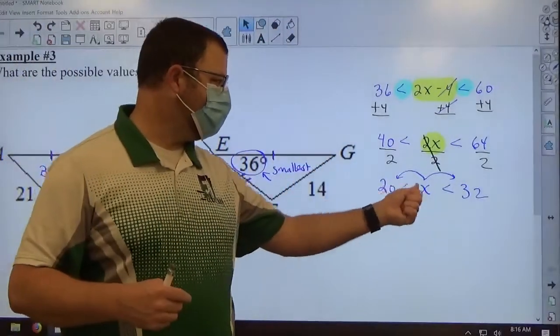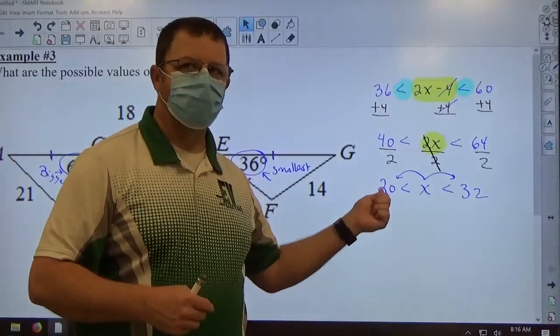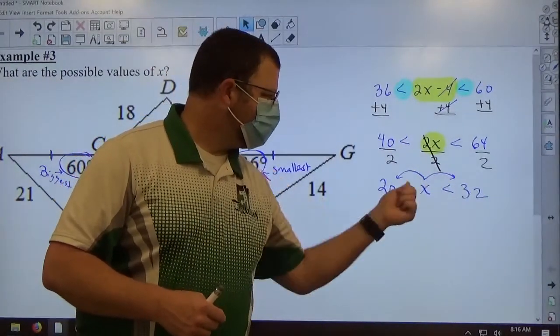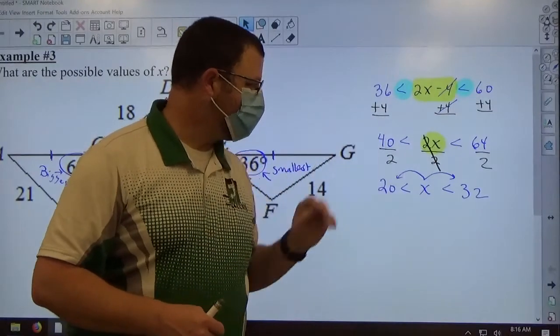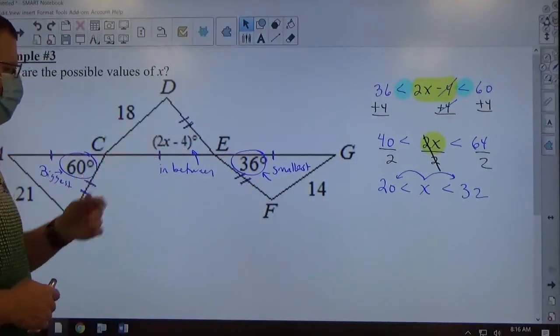Again, that's how the compound inequality works. If the small number is less than x, it's the same as saying x is bigger than 20. x less than the big number, x less than 32. So as long as x is between 20 and 32, this is true.